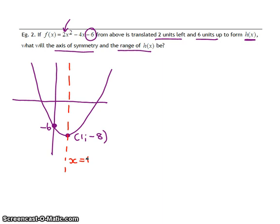Now, this question says, what will the axis of symmetry be if this graph is translated 2 units left and 6 units up? Let's just have a quick look at what happens to each of these points. If I translate this graph 2 units left, 1 unit, 2 units, so my x value of my turning point would now be at negative 1.